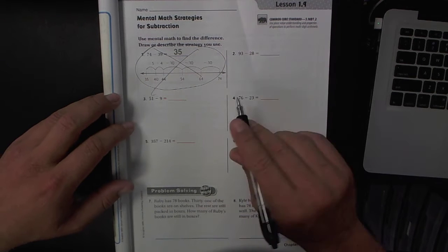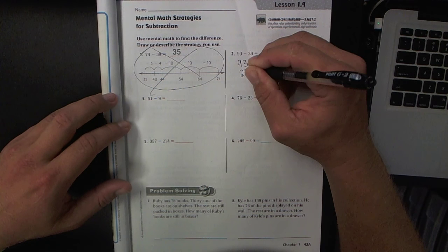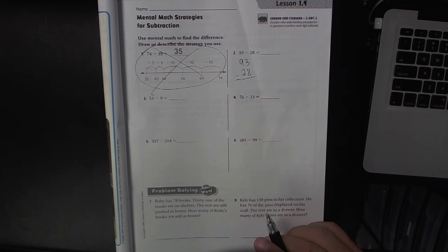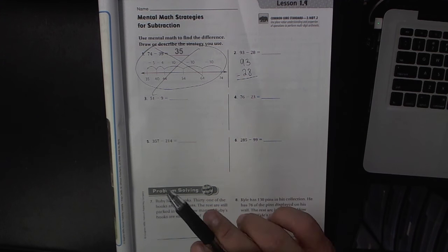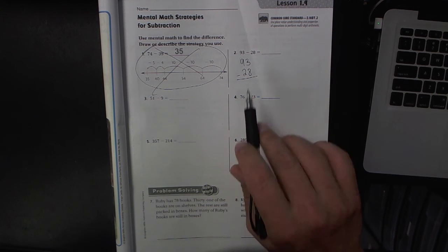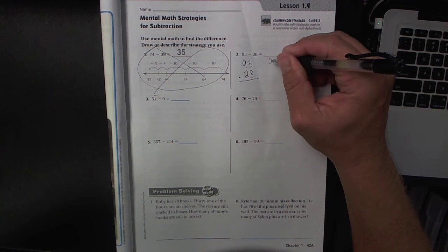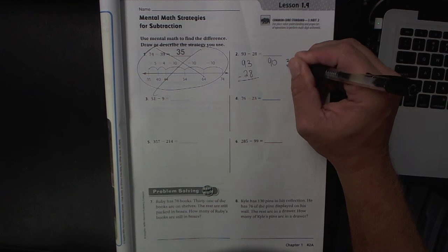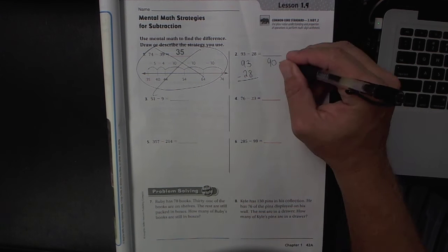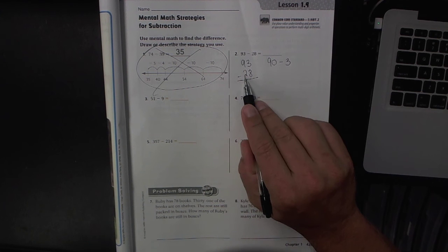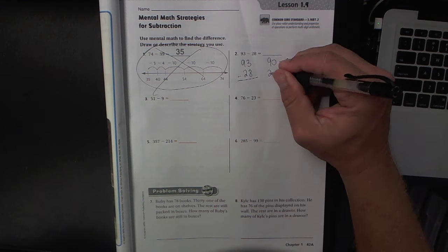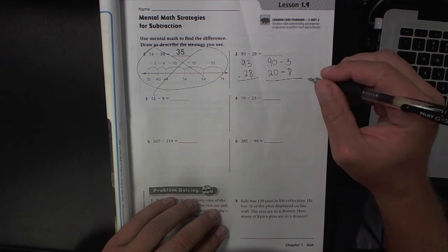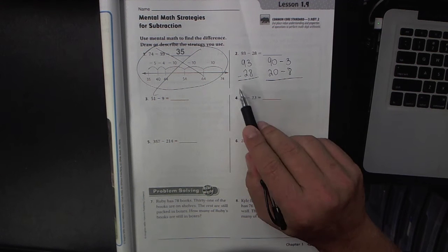The first thing you want to do, let's look at number two, is I would write it vertical so it's easy to see. So 93 minus 28. Now the break apart strategy, you want to look at each number and find out its worth or its value. So the nine is worth 90, then the three is in the ones place so it is worth three. The two is worth 20 because it is in the tens place, and the eight is worth eight because it is in the ones place. So you were breaking apart these numbers based upon their place value.